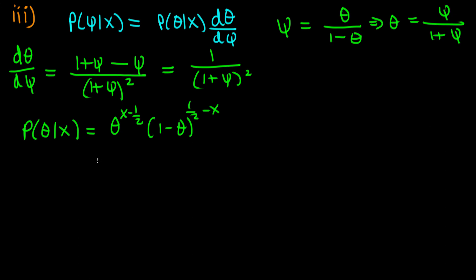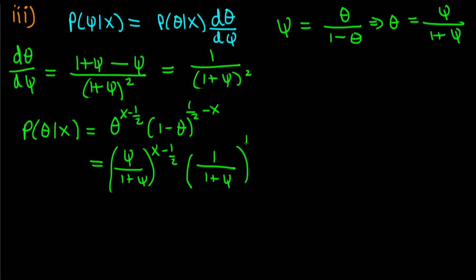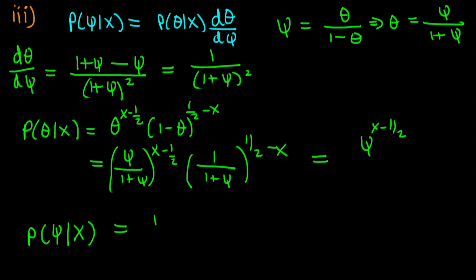Now p(theta | x) is proportional to theta^(x − 1/2) times (one minus theta)^(1/2 − x). Substituting theta = psi/(1 + psi), we get [psi/(1+psi)]^(x − 1/2) times [1/(1+psi)]^(1/2 − x). Collecting powers of psi, the denominator terms cancel, leaving psi^(x − 1/2). So p(psi | x) is proportional to psi^(x − 1/2) divided by (one plus psi) squared.